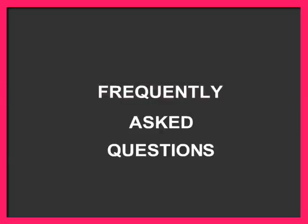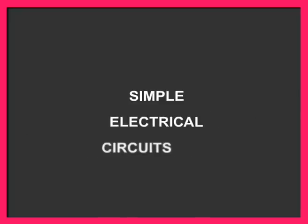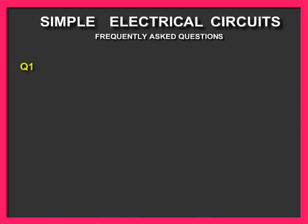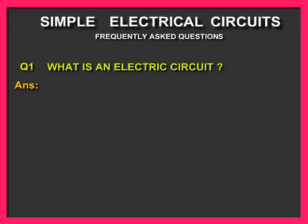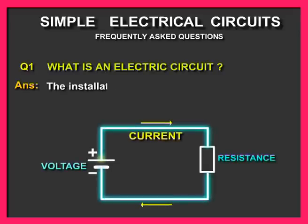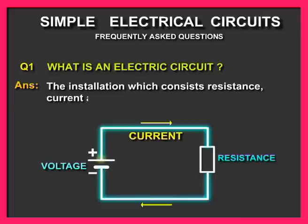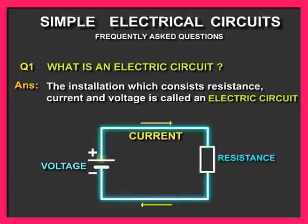Frequently asked questions in simple electrical circuits. Question number one: What is an electric circuit? Answer: The installation which consists of resistance, current, and voltage is called an electric circuit.